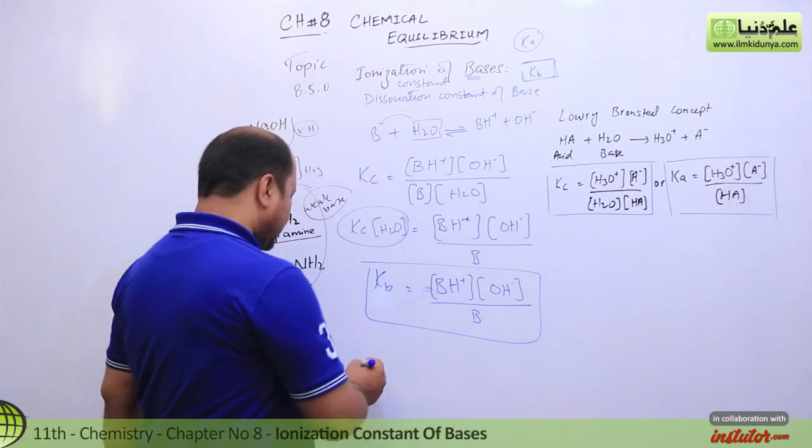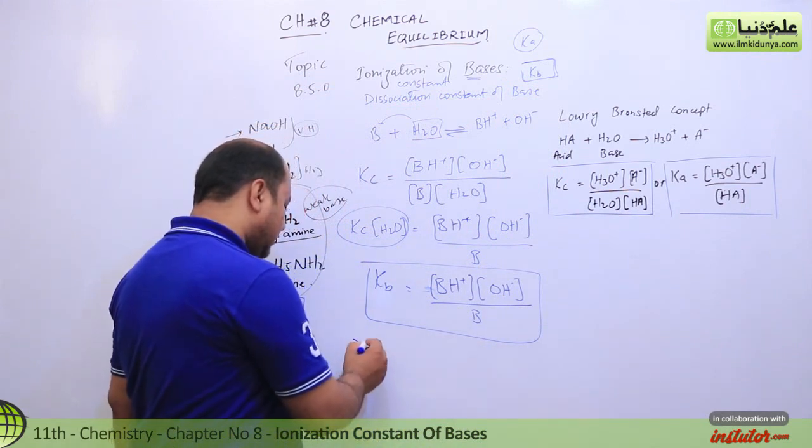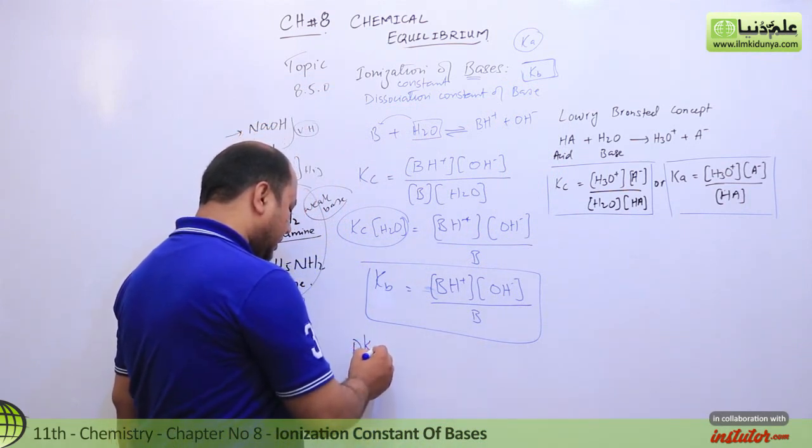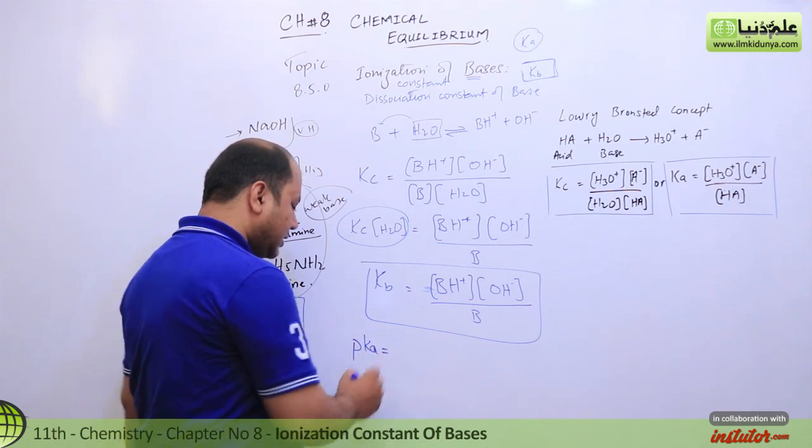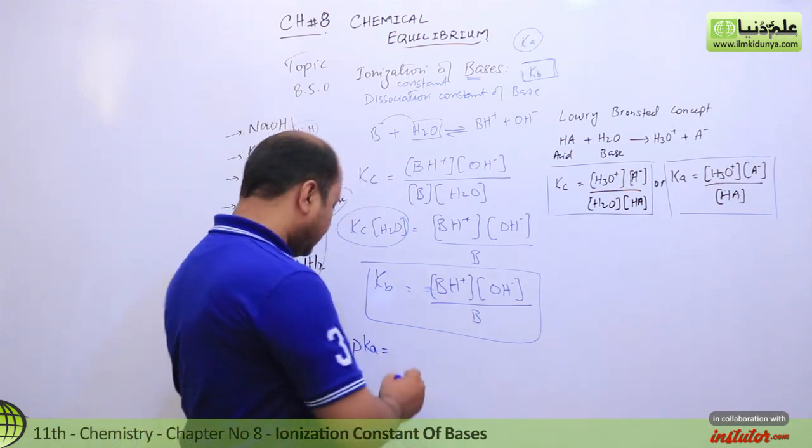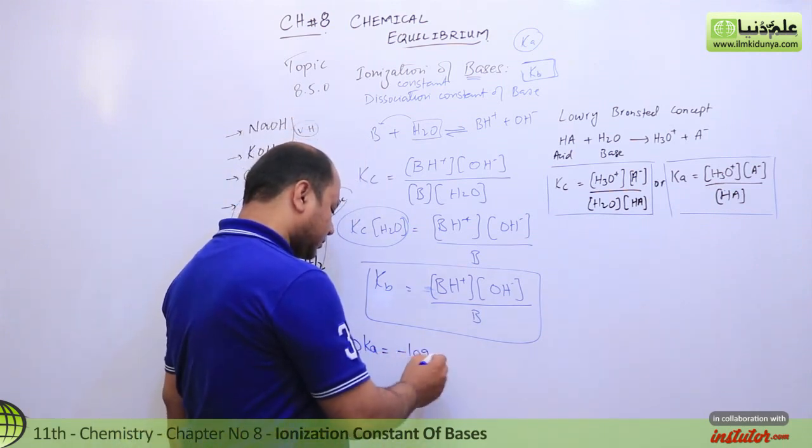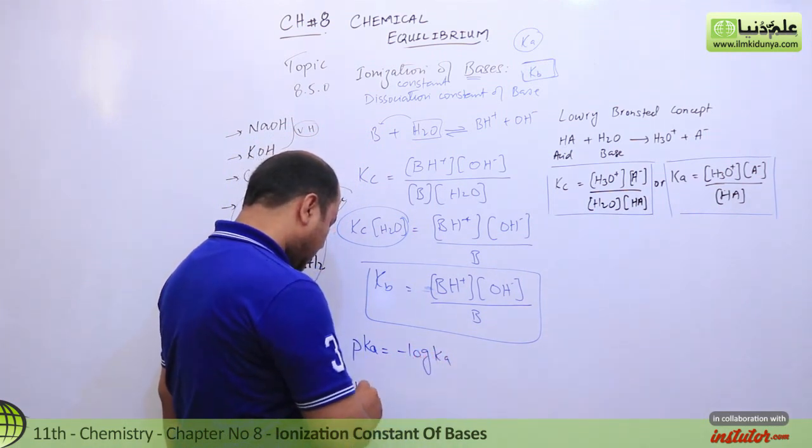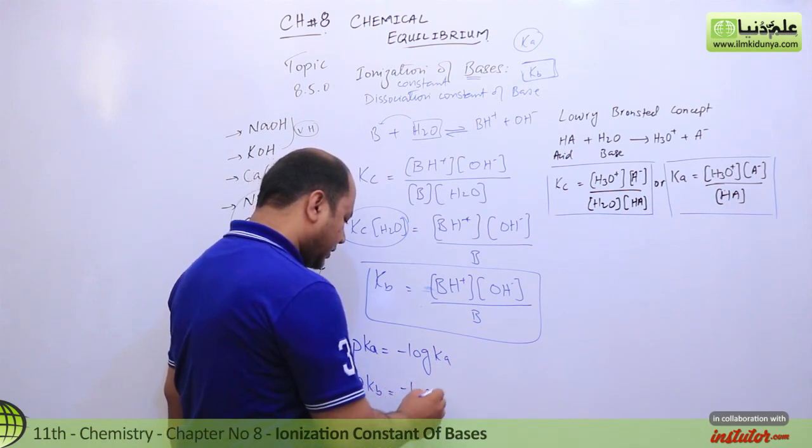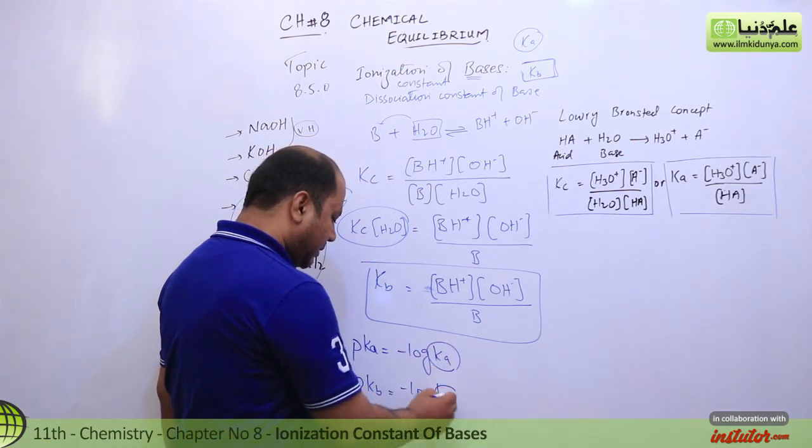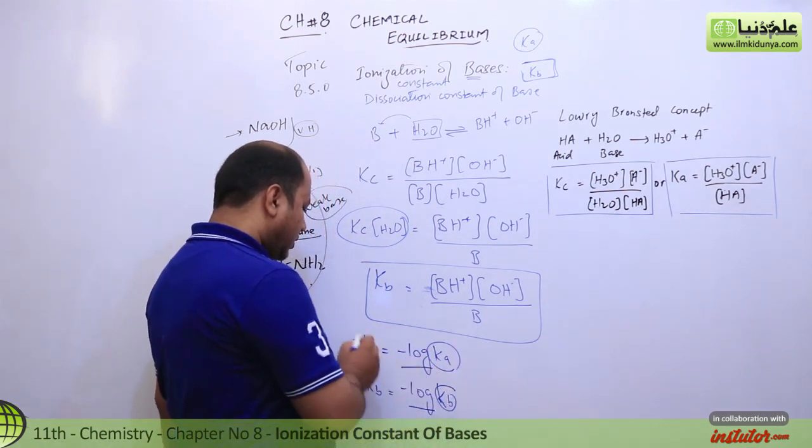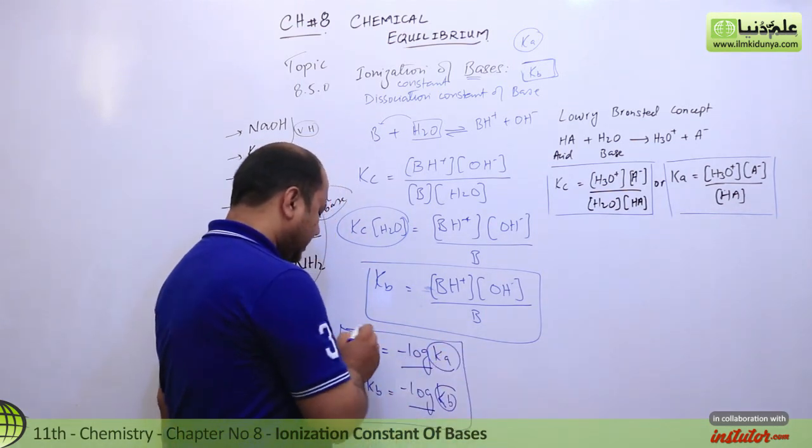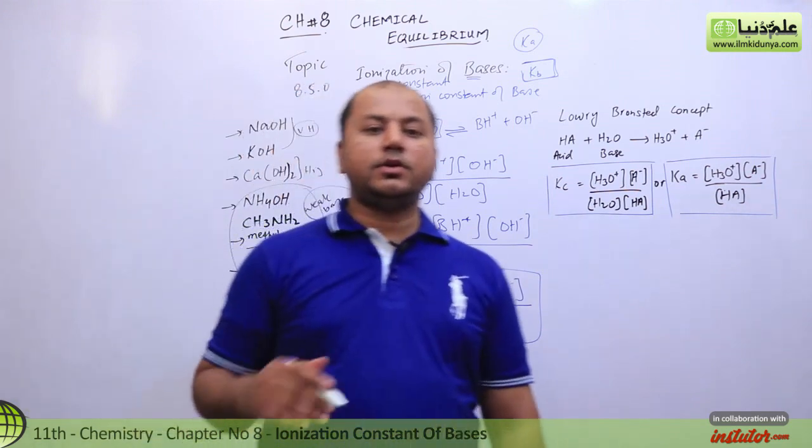For example, pOH is the negative log of hydroxide ion concentration. Similarly, pKb is the negative log of Kb. If you have the dissociation constant, you take negative log and you'll be able to calculate pKb and you'll be able to work with basic compounds and their acidity.